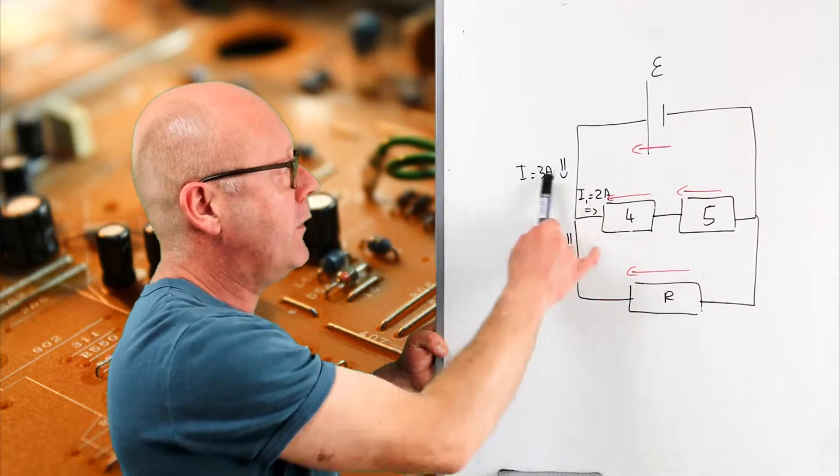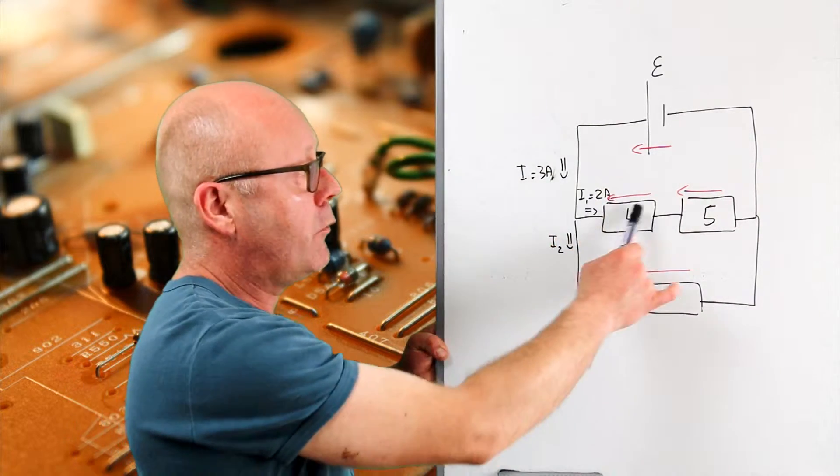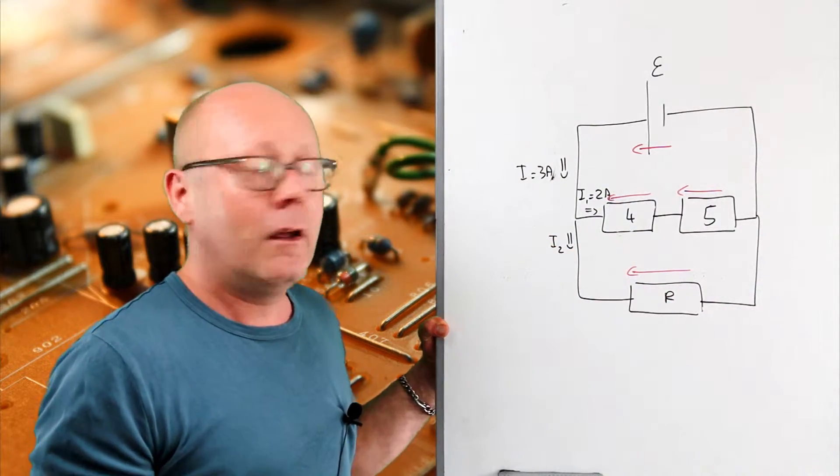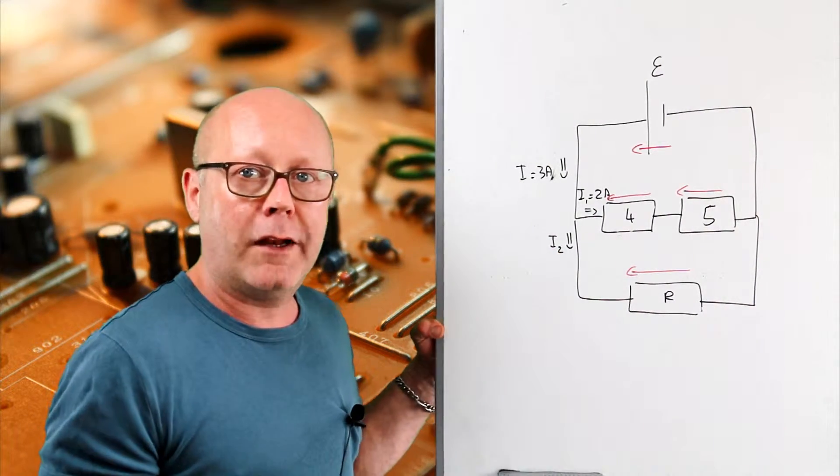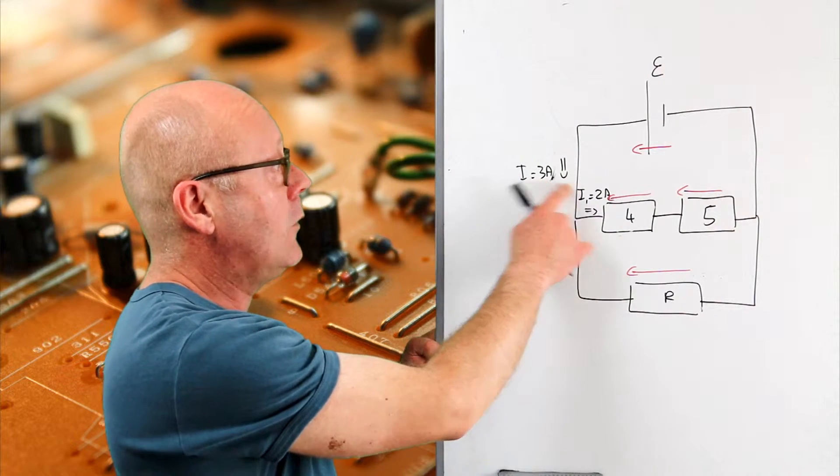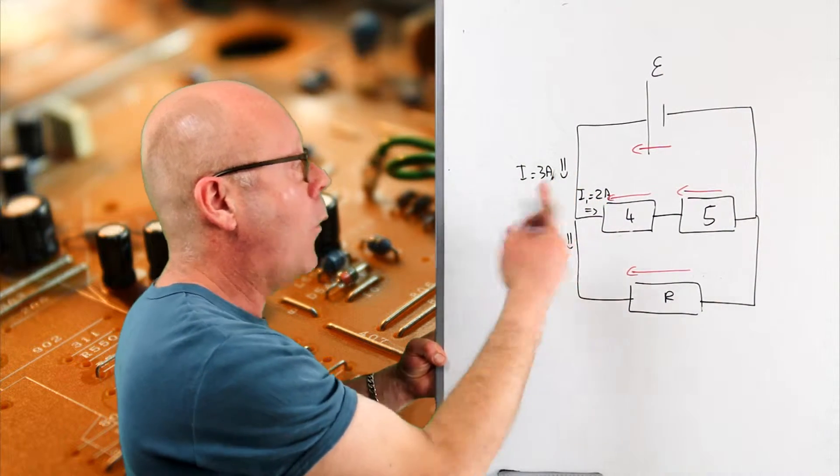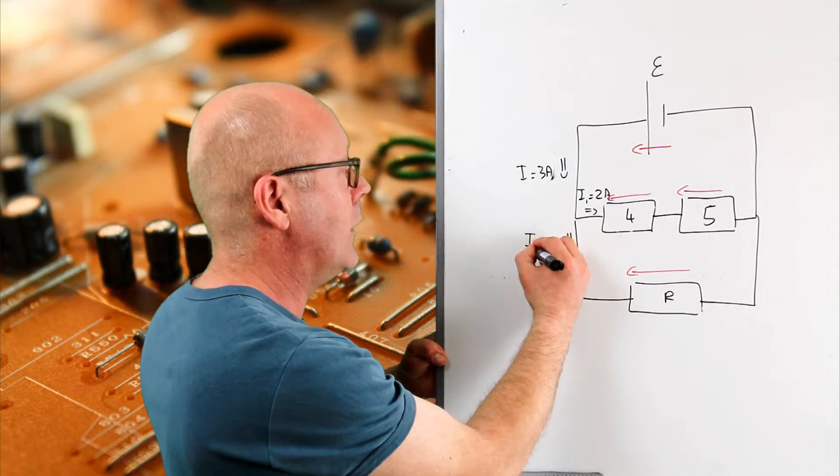The main current is 3A. The current going through the first branch is 2A. Well, I get to use the first law of Kirchhoff to find out what current is going in the second branch. 3A equals 2A plus 1A, so I2 equals 1A.